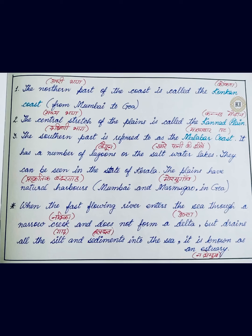When a fast-flowing river enters the sea through a narrow creek — jab teez behne wali nadiyan samundar mein milti hain through a narrow creek — and does not form a delta, but drains all the silt and sediments into the sea, it is known as an estuary — isse hum Nadi Mukh kehte hain. So when rivers meet the sea through a narrow tributary-like channel without forming a delta, draining all sediment into the sea, that is called an estuary, or Nadi Mukh.